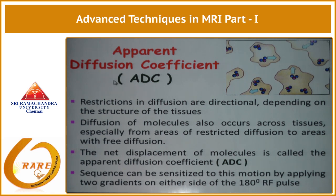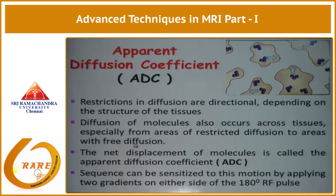What it actually means is: the restrictions in diffusion are directional, as you can see the arrows pointed here. The restriction for this molecule is in this direction, and for another it is in this direction. So the restrictions in diffusion are directional and depend on the structure of the tissues. Please note that diffusion of molecules can also occur across tissues, especially from restricted diffusion to the area of free diffusion.